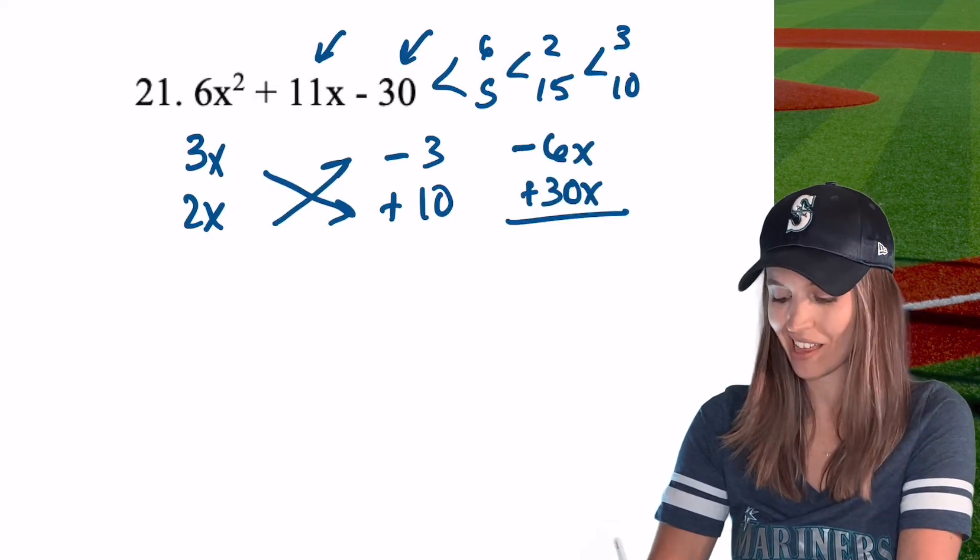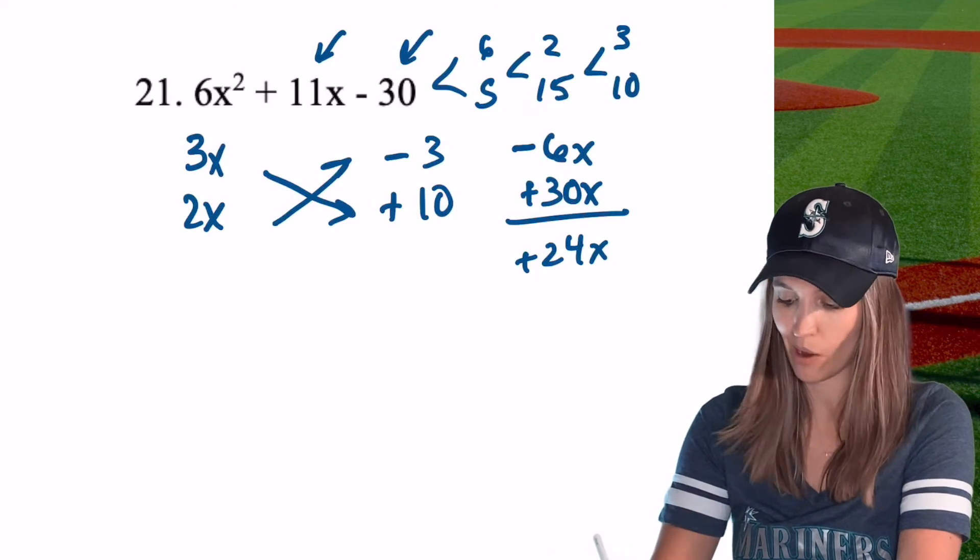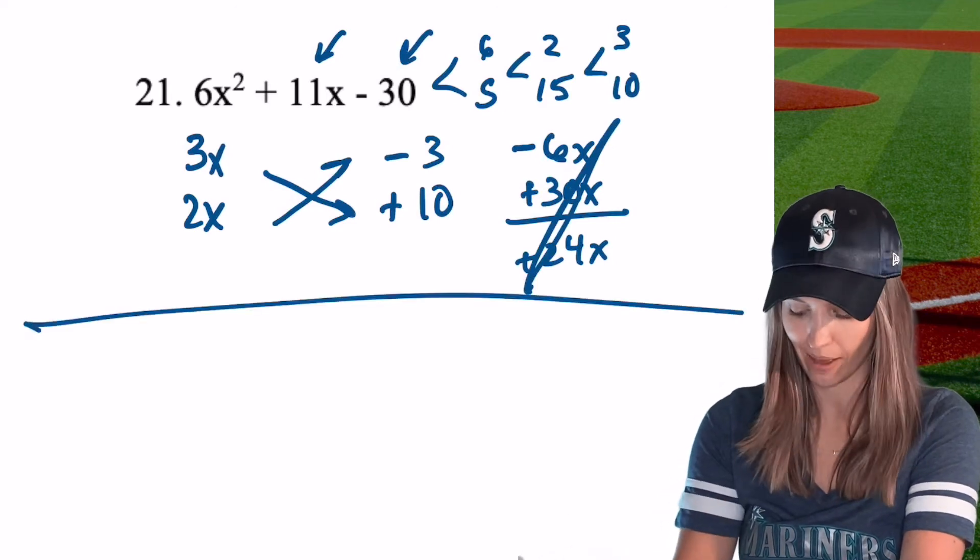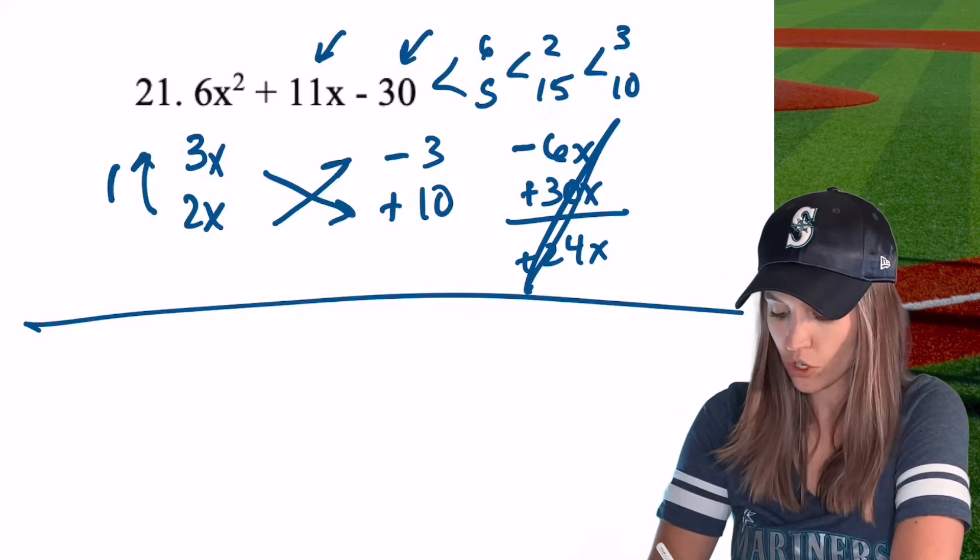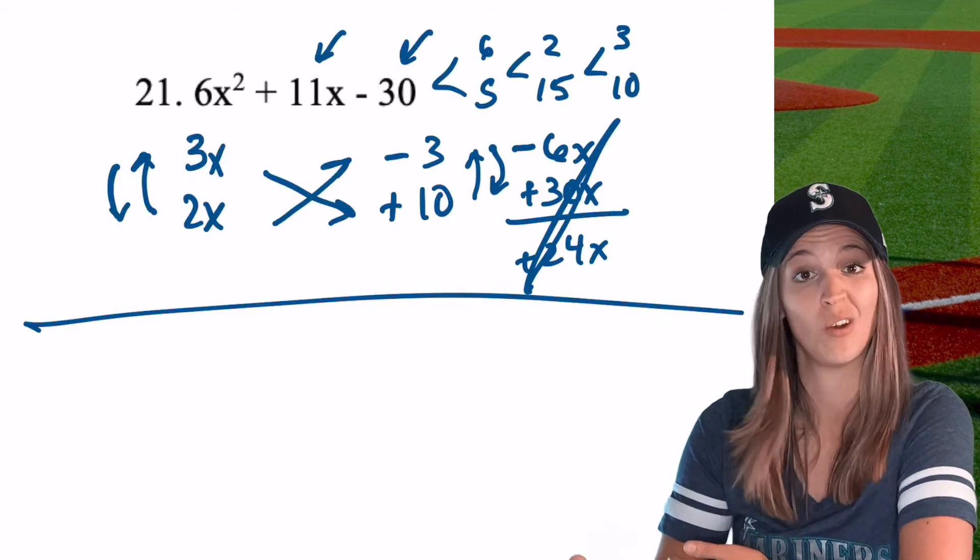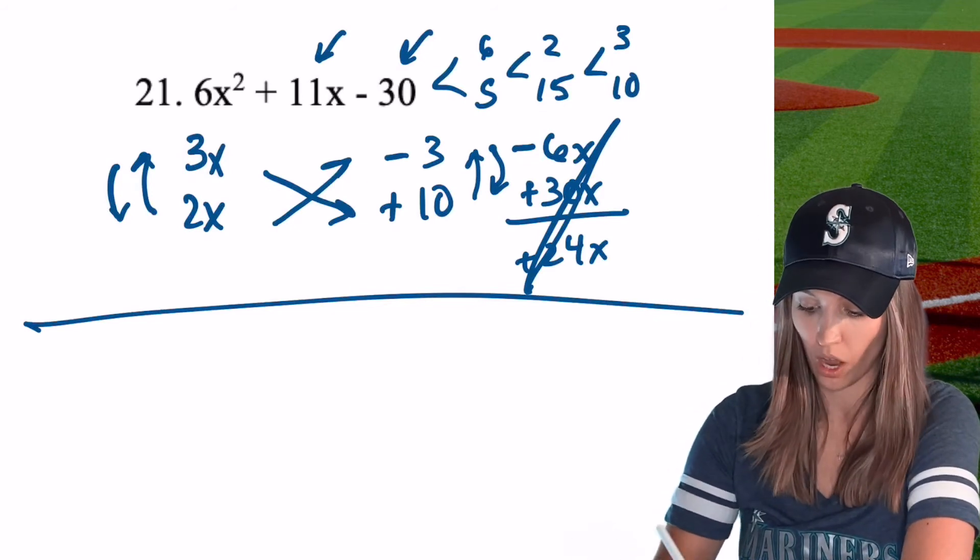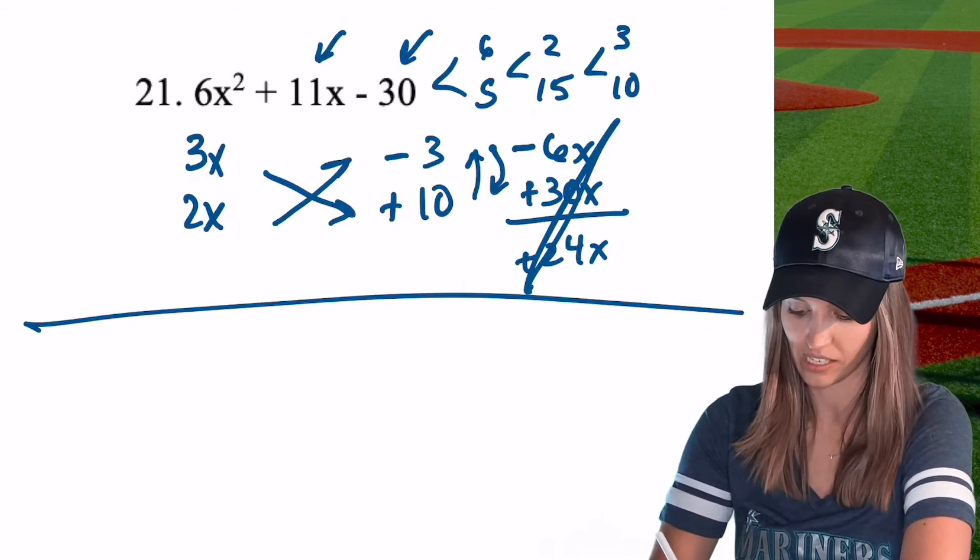Okay, so let's do crisscross and see if it works. If I add those together, oh man, I get positive 24, and that is not what I wanted. I wanted an 11, so that's out. Okay, well, let's try again. What if I guess I could switch these two, or I could switch these two, or I might have to do 6x and 1x altogether. So let's try to just switch, let's go with the negative 3 and 10 first and see if that fixes it.